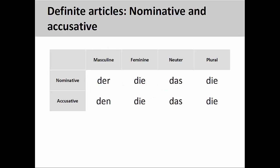You will also recall that each noun gender — masculine, feminine, neuter — and plural nouns have their own definite article, and that the masculine definite article is the only one that changes as it moves from the nominative to accusative case. You may wish to review the presentations on nominative and accusative cases before continuing with this one.